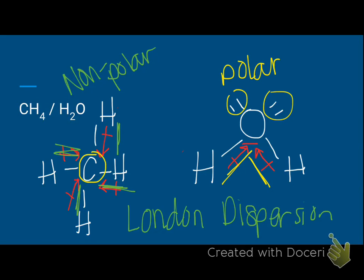When answering questions about IMFs, always identify the strongest force present. Start with hydrogen bonds — rule that out first. If no hydrogen bond, check for dipole-dipole. If not that, then London dispersion. A quick trick: check polarity first. If anything is nonpolar, you default to London dispersion and save time. Go ahead and finish your worksheets and work through the pogo worksheet — it'll help you understand especially what's really going on with London dispersion.